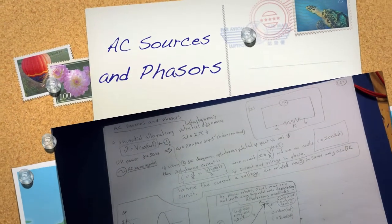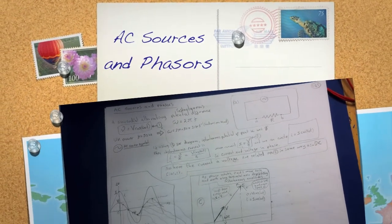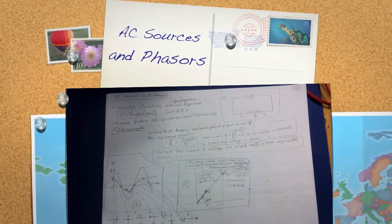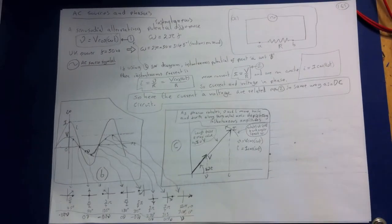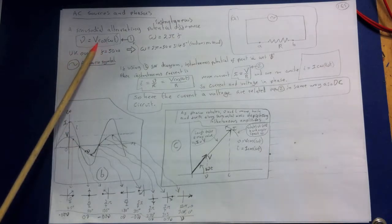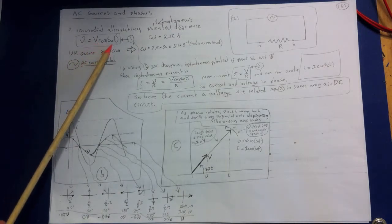We first consider several circuits connected to an alternator or oscillator that maintains between its terminals a sinusoidal alternating potential difference given by V equals capital V cosine omega t.